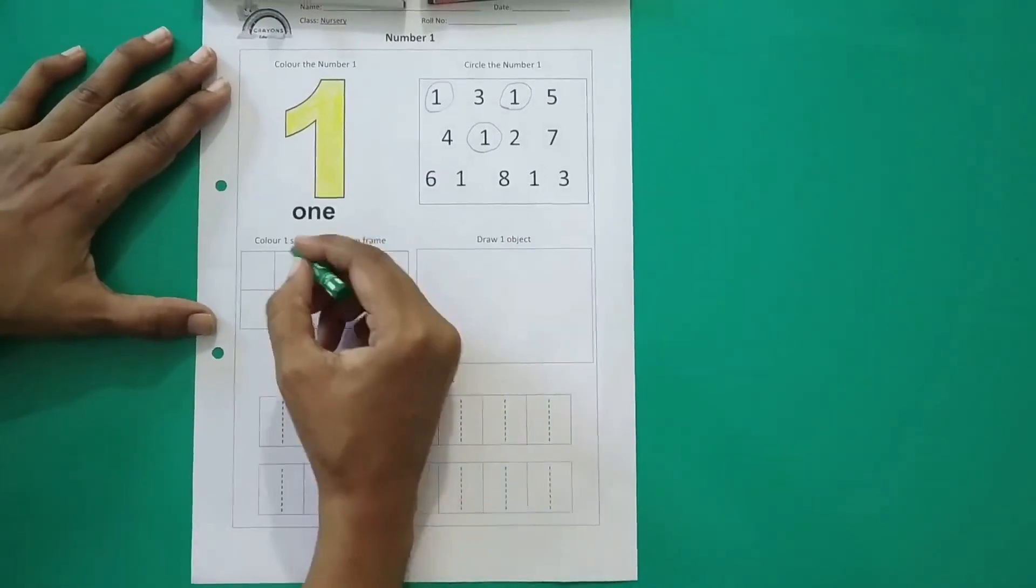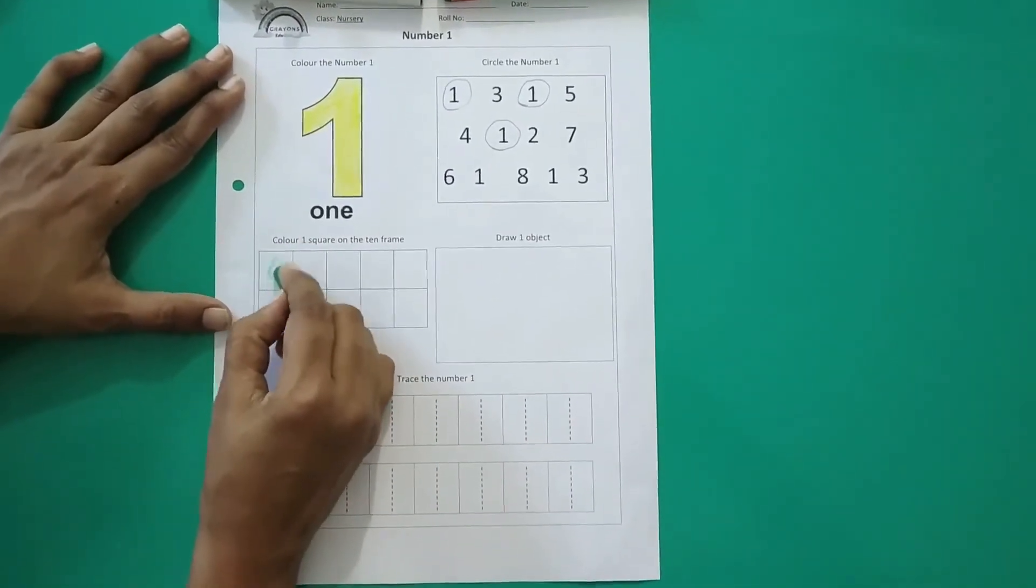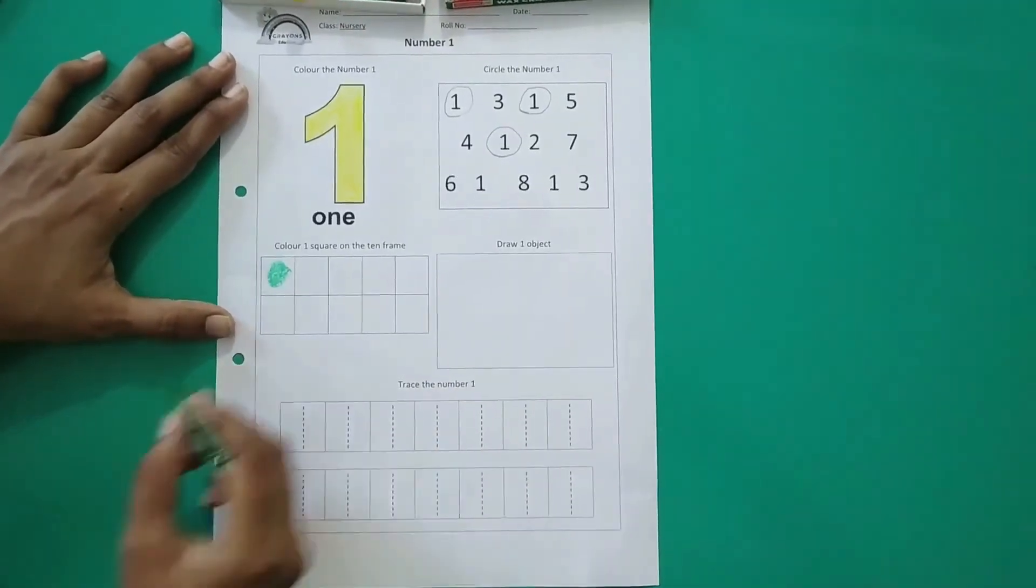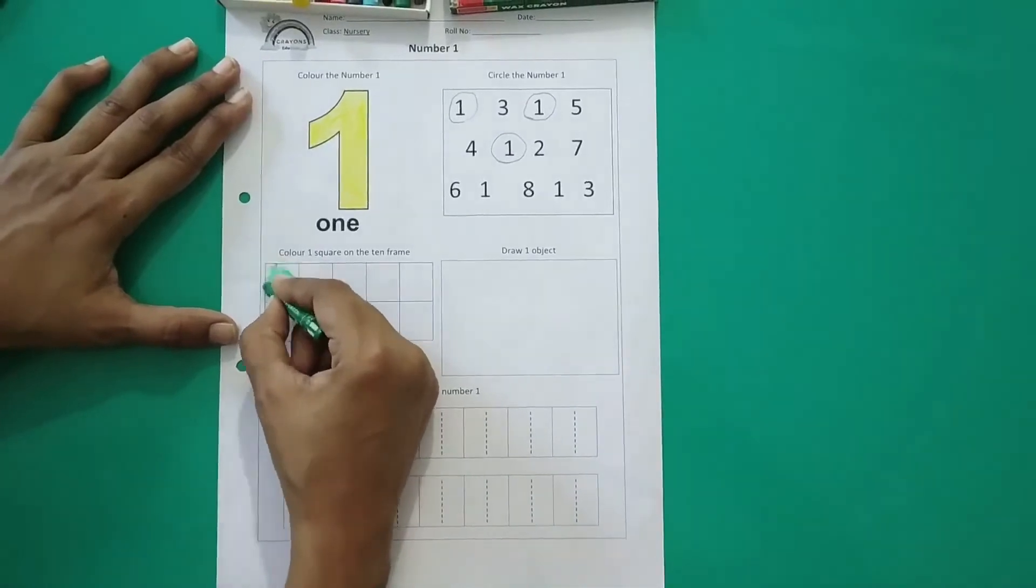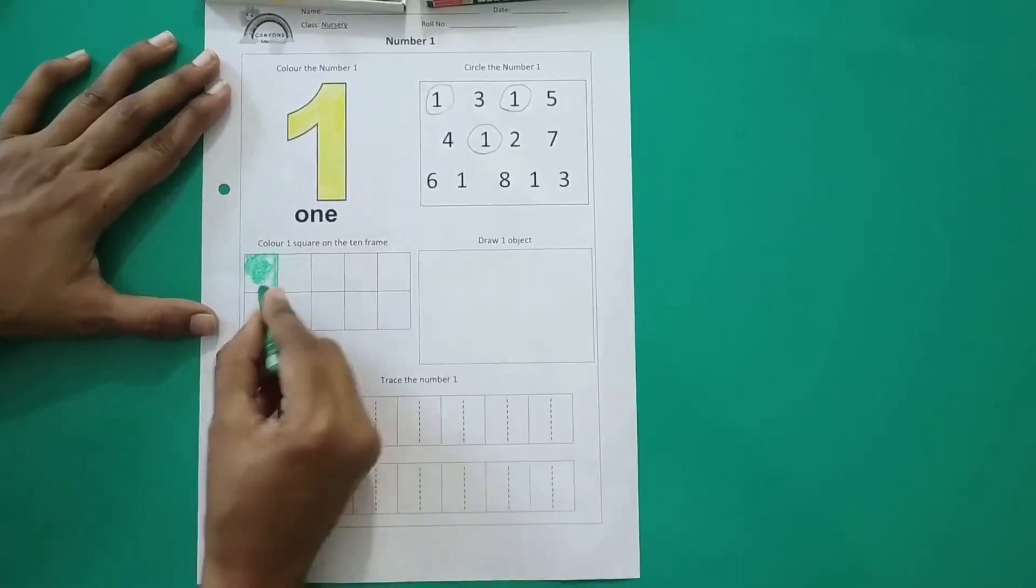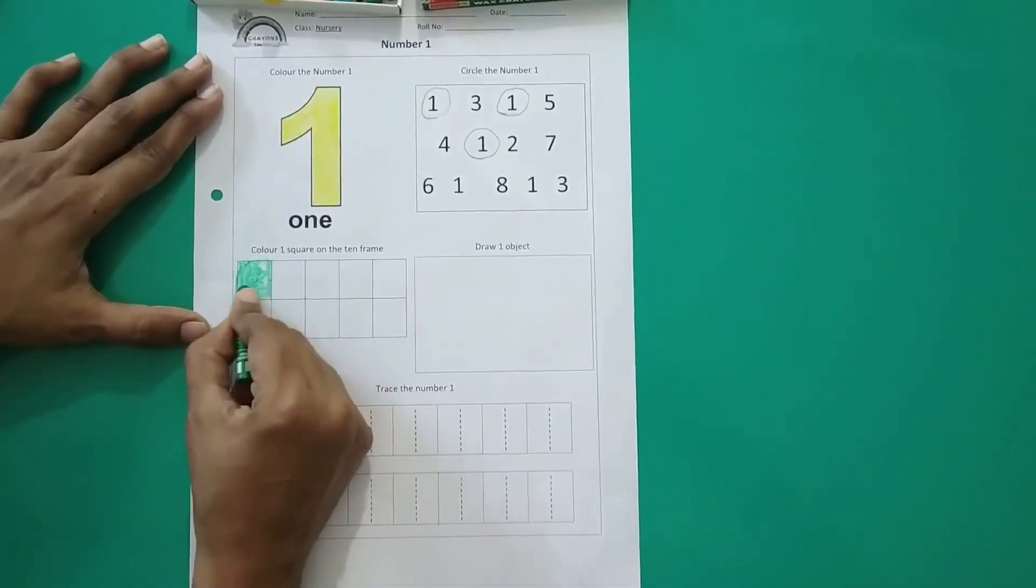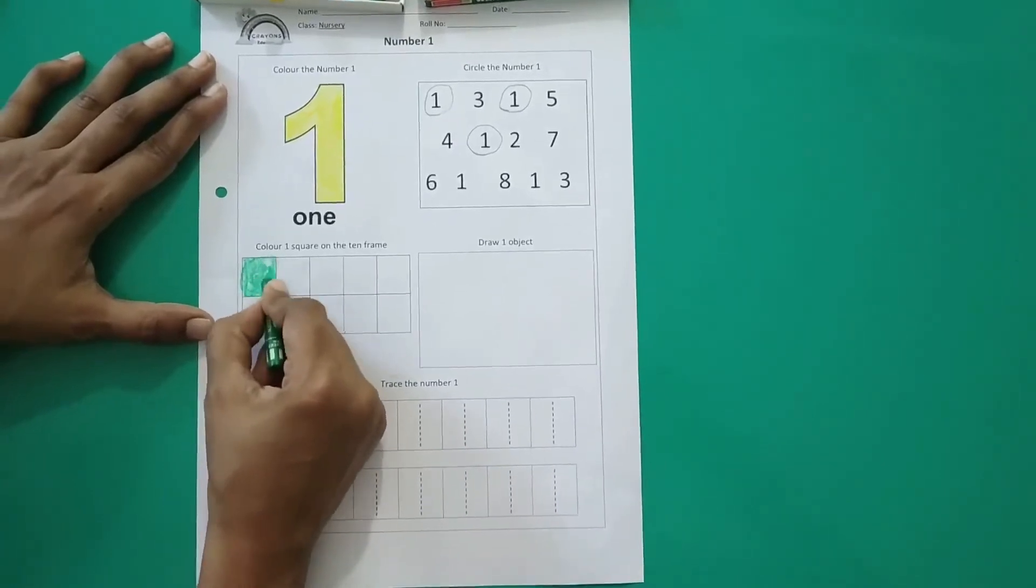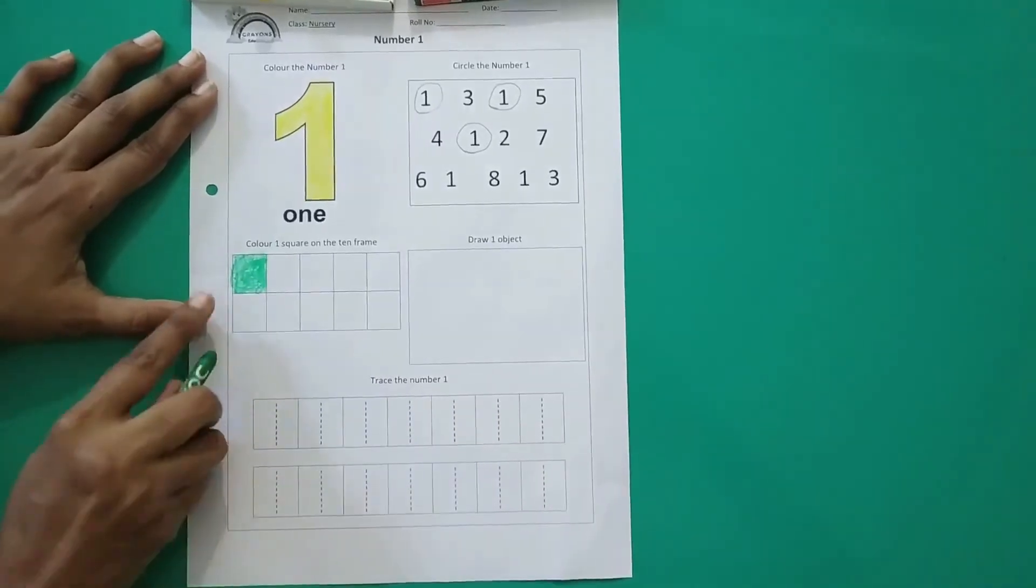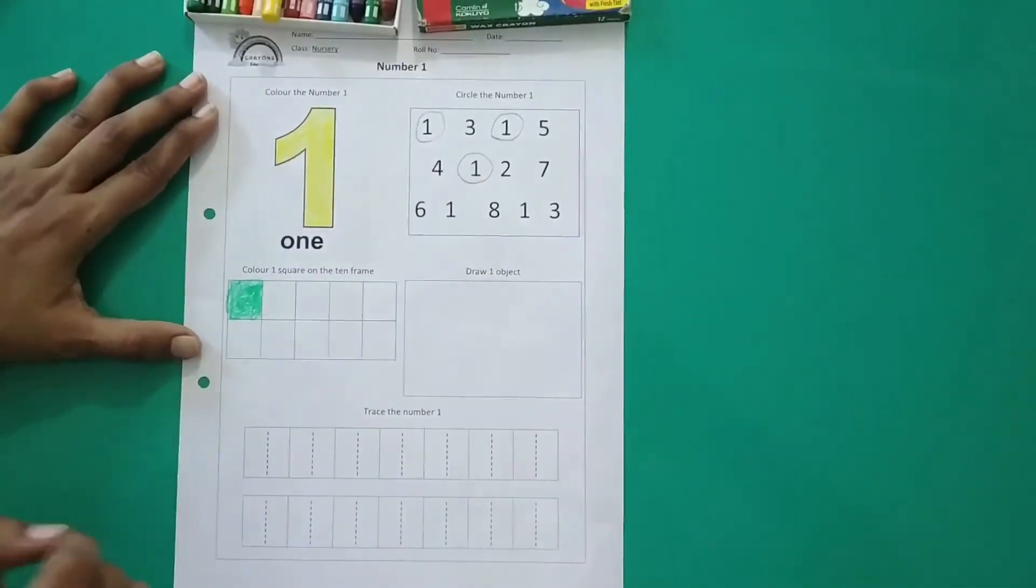So let me take the green color. If you want you can color the whole square or you can just color a big circle, that is also fine. If you want to color the full square you can color the full square, but neatly without going out of the line. And how many squares will you color? You will only color one square. See I have colored only one square. So I will stop here because I have to color one square.